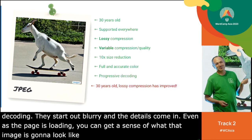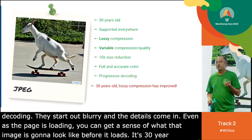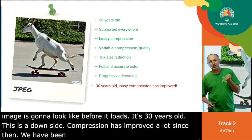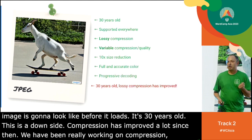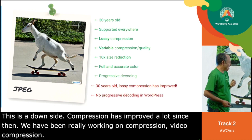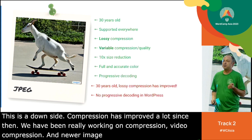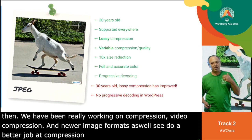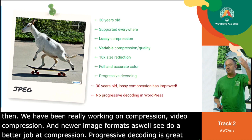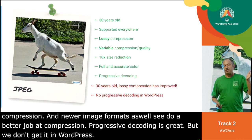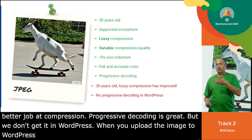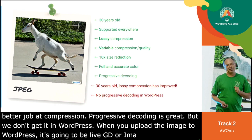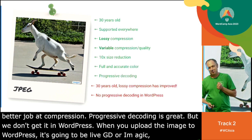It's 30 years old, and compression has improved a lot since then — newer image formats do a much better job. Also, progressive decoding is great, but we actually don't get progressive decoding in WordPress, because the backend that handles image recompression when you upload to WordPress is either libgd or ImageMagick, the two libraries PHP uses, and neither supports progressive decoding. So we don't get to benefit from this in WordPress.